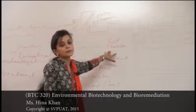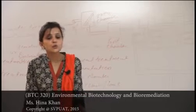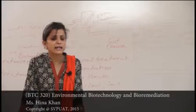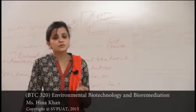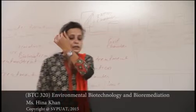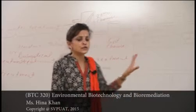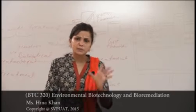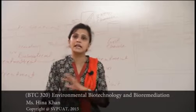Next is the grit chamber, which is present next to the screening chamber. Grit includes sand, ash, eggshells, etc., having a diameter of around 0.2 millimeters. The effluent moves to the grit chamber, where the velocity is reduced so that these particles settle down. Grit chambers can be of three types: horizontal, aerated, or vertical grit chambers.